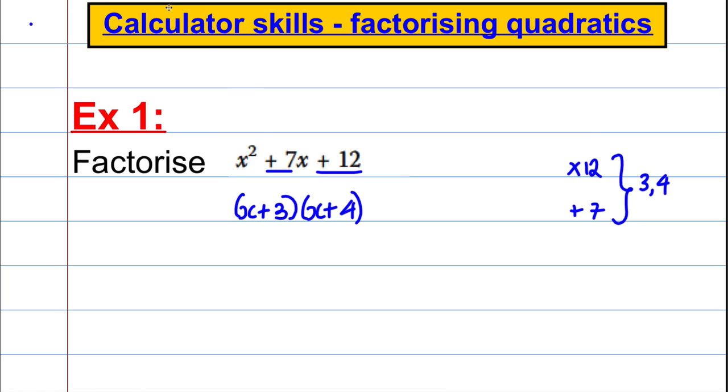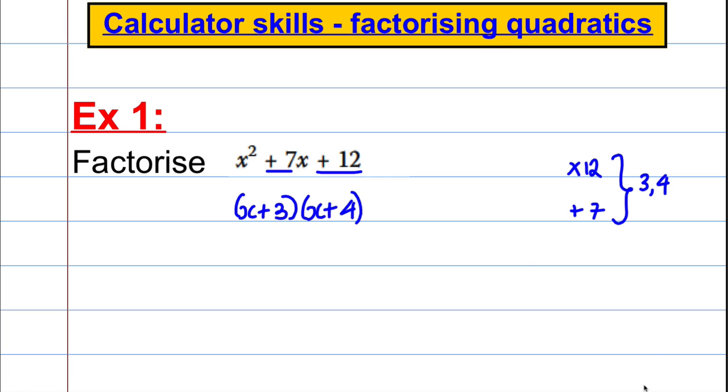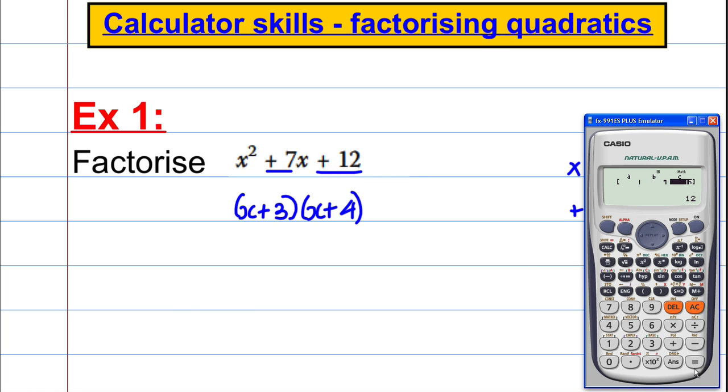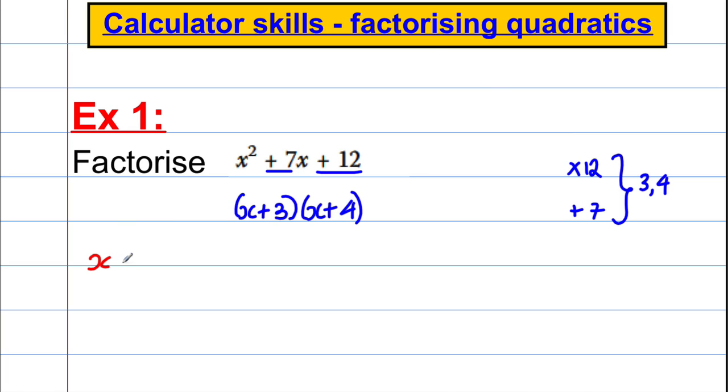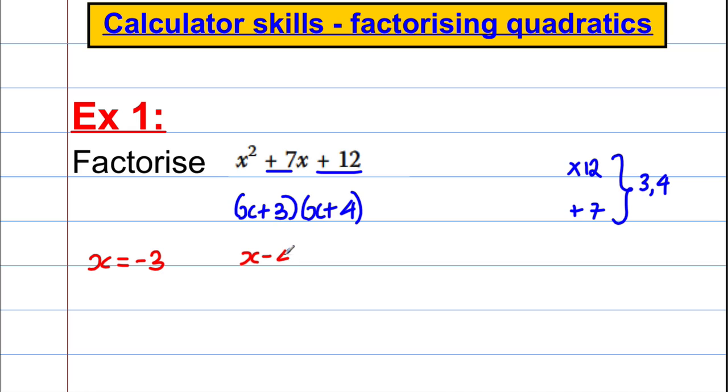There's no need to check this one in an exam because it's quite straightforward. But just to show you how it works, you get your calculator. Mode, equation, quadratic equation. We have A is equal to 1, the B is equal to 7 and the C is equal to 12. If you press equal, it tells you that your two solutions are x is equal to negative 3 and x is equal to negative 4.